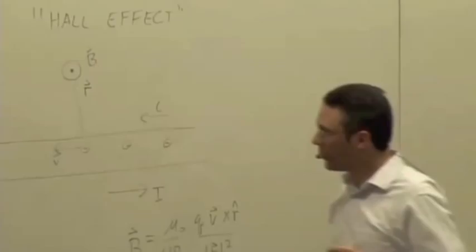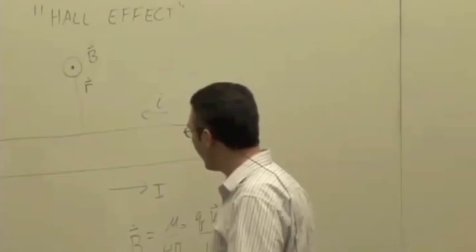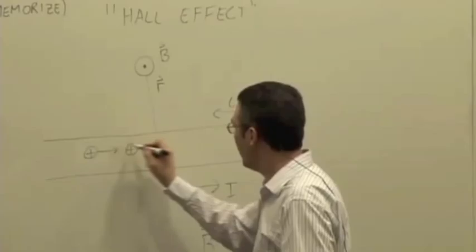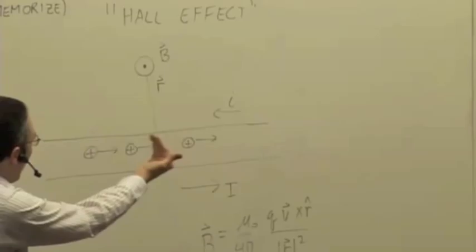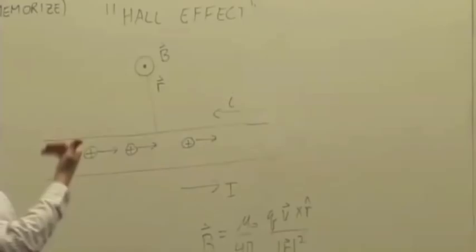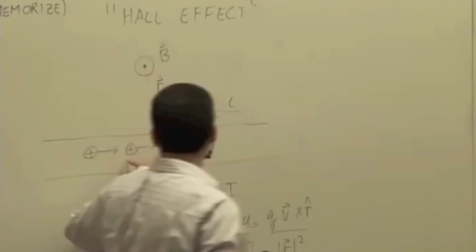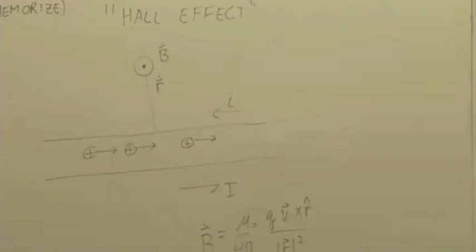We know from our model of metals that the electrons are the things that should be moving. But this is where the idea of conventional current comes in — we could in principle have positive charges moving in the other direction. If the mobile charges were positive, then V cross r gives thumb pointing out, and you multiply by a positive charge, your thumb still points out. So I can't tell the difference by looking at the magnetic field: negative charges moving one way or positive charges moving the other give the same direction of magnetic field, which is why we can define conventional current and not usually worry about the direction of the electron current.